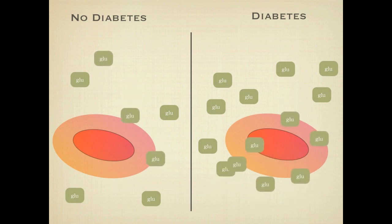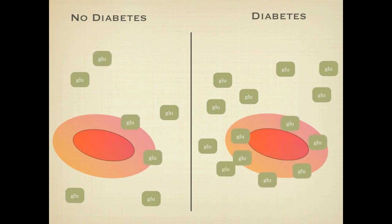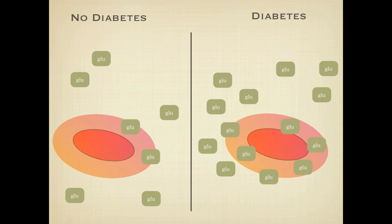As red blood cells live for three months, HbA1c is a reliable guide to glucose control. In people who have an altered hemoglobin molecule — for example, due to spherocytosis, sickle cell disease, etc. — HbA1c is not a reliable guide to glucose control. Fructosamine, a plasma protein, is used instead.